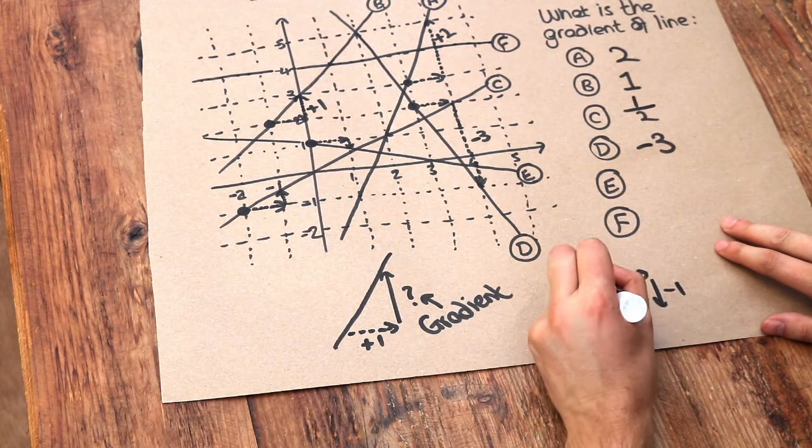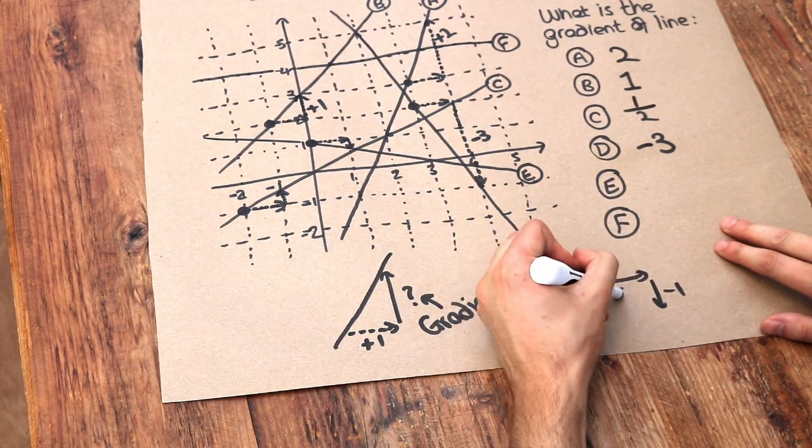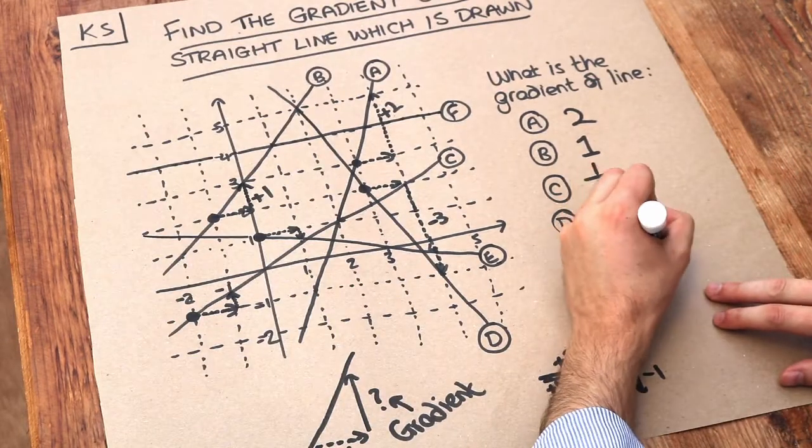then can you see that if you just went one square across, then we would only be going a third down. So therefore that gradient here is negative a third.